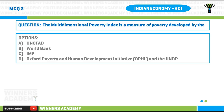Question number three: the Multi-dimensional Poverty Index is a measure of poverty developed by whom? Options: A) UNCTAD, B) World Bank, C) International Monetary Fund (IMF), D) Oxford Poverty and Human Development Initiative and the UNDP.